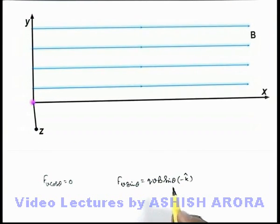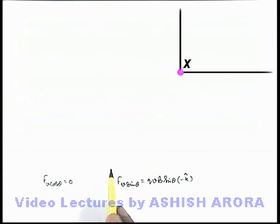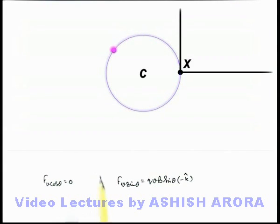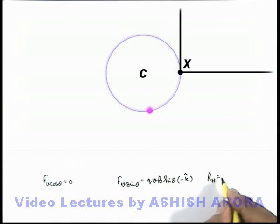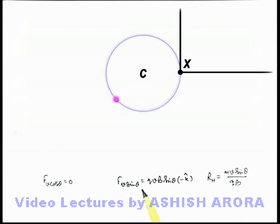Now if we rotate this situation and look from the side along the x-axis, the magnetic force acting on the particle due to v sin theta is toward the left. When the particle starts moving in a circular path due to v sin theta, about the center C, the radius of this helical path r_h is m v sin theta / qB.